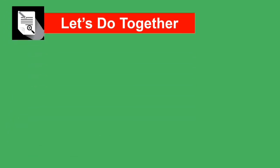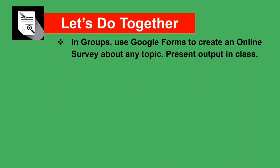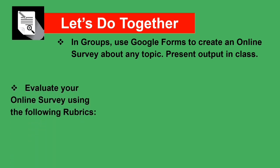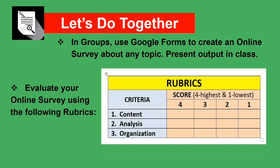Now let's work together in groups. Use Google Forms to create an online survey, then present your output in class. You will be divided into groups, and each group will create an online survey using Google Forms. Evaluate your online survey using the provided rubrics, which have criteria: Content, Analysis, and Organization, scored from 1 (lowest) to 4 (highest).